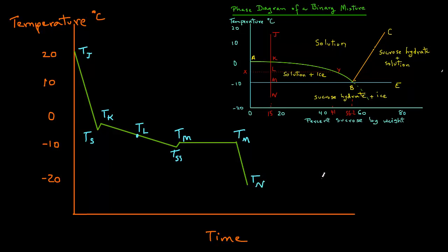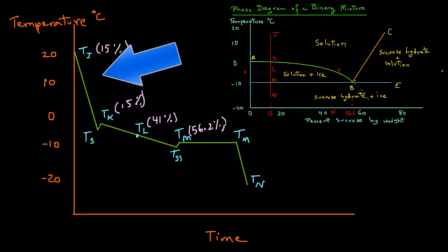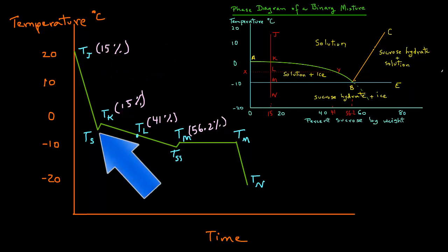We will write down the concentrations to correspond with the other figure. TJ was for 15% sucrose. TK is at 15% sucrose. But TL represents 41% sucrose, and TM represents 56.2% sucrose. Let's look at this process. Starting from location J, sensible heat is removed as the temperature decreases from TJ to TK. Location S refers to supercooling. When temperature decreases to TS, nucleation will occur and due to crystal growth, heat of crystallization is released, raising the temperature to TK. The initial freezing point of the water-sucrose mix is therefore TK.